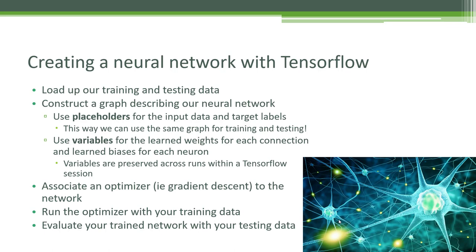We'll construct a graph just like before. We'll also introduce a new concept called a placeholder — a way of having a placeholder within your graph for various data. By using placeholders, we can use the same graph structure for both training and testing, and for actually applying our neural network in the future. We can feed training data into the input placeholders and do gradient descent on the resulting network, and afterward feed a different set of data into those same placeholders to test the results on data the network has never seen before.